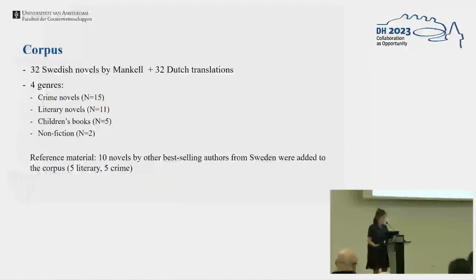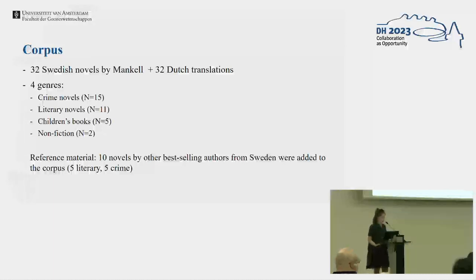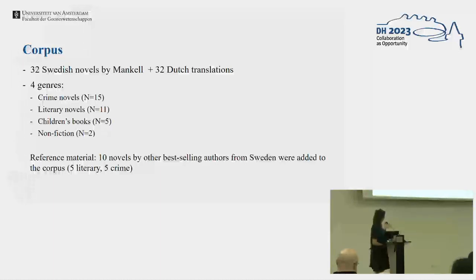My corpus consists of 32 Swedish novels by Mankell and 32 Dutch translations of his works in four different genres: crime novels, literary novels, children's books, and non-fiction. I also had some reference material — 10 novels by other best-selling authors from Sweden.